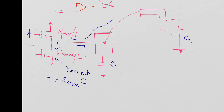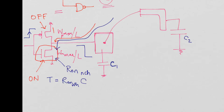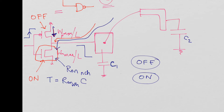When there's a rising edge at the input, the P-channel is switching off — it was on before — and the N-channel is just now switching on to discharge the output. What happens is the N-channel not only has to sink the current from the output capacitance, it also has to sink current from the P-channel until it turns off. So that is a waste of current — this is what we call crowbar current. The output buffer is intelligently designed so that whichever transistor is turning off goes off first, and then the other one turns on.